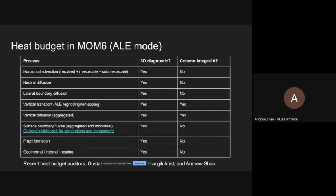Vertical transport is not an explicit advection — it's a result of the regridding/remapping. There's also vertical diffusion, which covers all the parameterized vertical turbulent diffusivity including shear-driven mixing, boundary layer mixing, parameterized convection, and double-diffusive mixing. This vertical diffusion equation is solved based on the aggregated turbulent diffusivity from all those processes. For the heat budget, surface boundary fluxes are extraordinarily important. There are diagnostics for both the aggregated and individual ones. Gustavo has a nice notebook that shows the relationship between each of those, so you can ensure you're not double-counting or under-counting the surface fluxes.